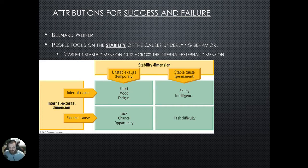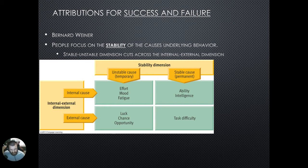When you look for things that are outside of a person — situational or environmental factors that can change or are temporary — we find that luck, chance, and opportunity all fall on the unstable cause of the stability dimension. Your luck, chance, and opportunities can all change. But when you look at the external dimension combined with something permanent, such as task difficulty, that remains consistently easy or difficult for you — it is permanent.